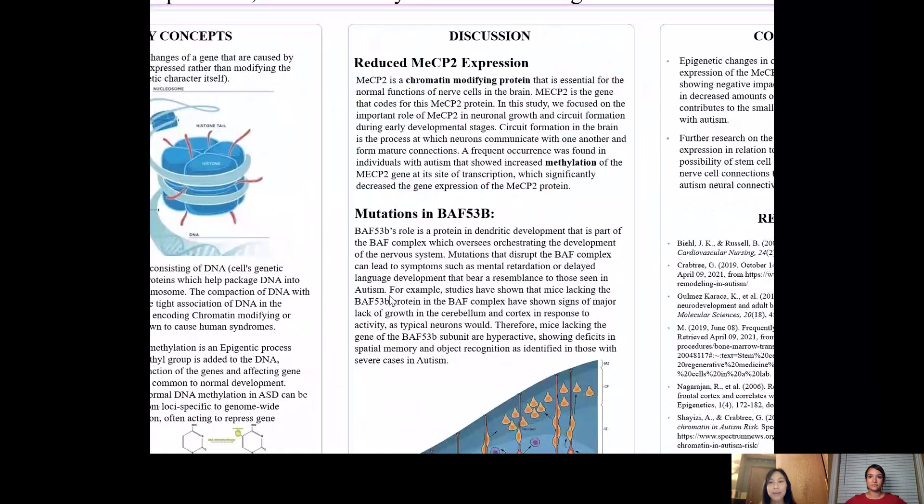And with that said, MeCP2 protein is an essential protein for normal growth function in communication of nerve cells. However, in those with autism, it was observed that there was a significant decrease in the MeCP2 production because of DNA methylation on the MeCP2 gene.